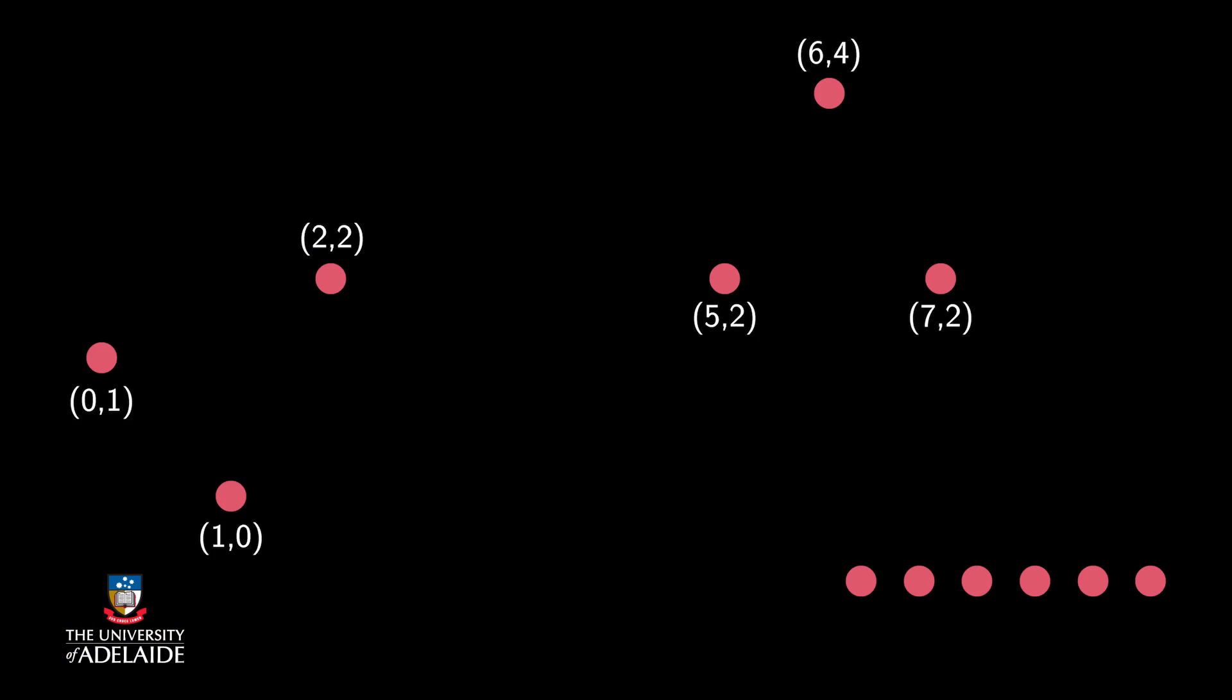Now I will demonstrate how the algorithm works by showing you an example. In this example, I have six points in Euclidean space. So I represent each cluster by its centroid, which is the average of the points in that cluster. I also merge two clusters which have the nearest centroids.